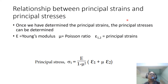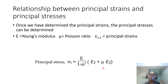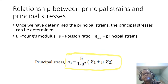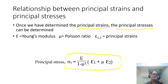What is the relationship between principal strains and principal stresses? Once we have determined the principal strain, the principal stresses can be determined. If you know your Young's modulus E, your Poisson's ratio mu, and your principal strains, then you can calculate: sigma 1 equals E divided by (1 minus mu squared) times (epsilon 1 plus mu times epsilon 2). This is the relationship between principal strain and principal stress.